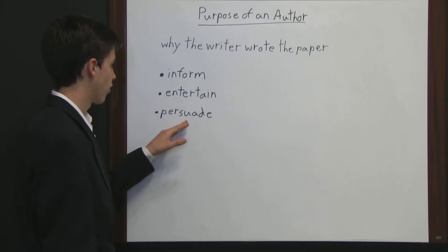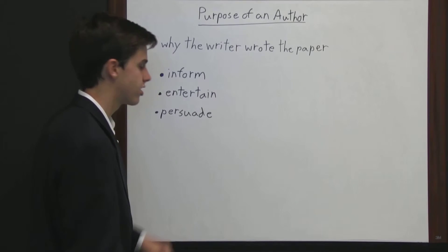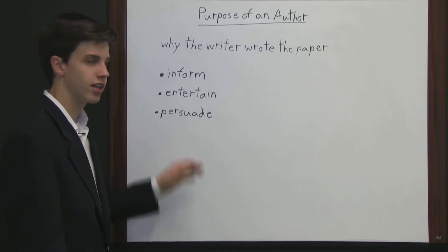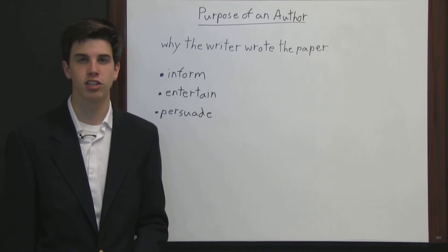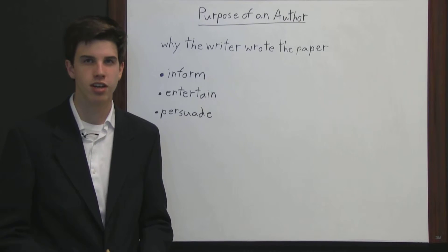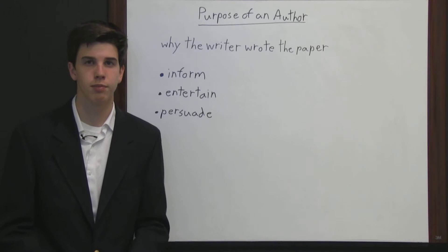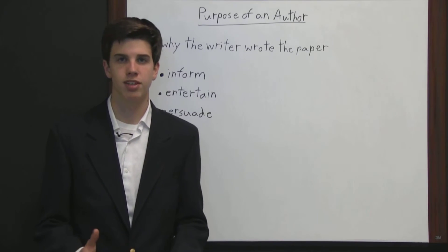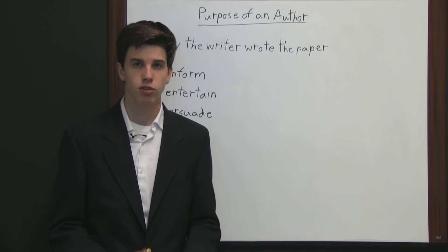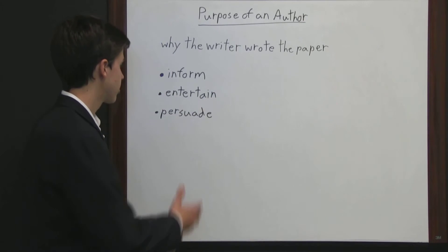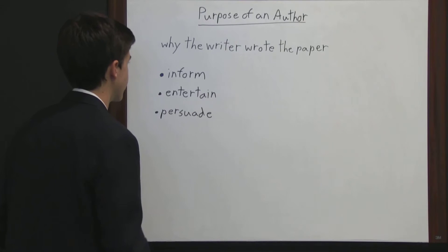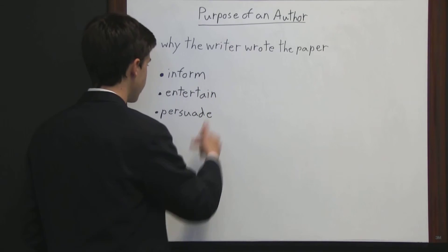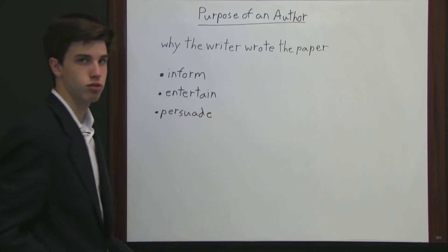The third purpose is to persuade, and this is actually the hardest type to determine because generally an author is going to try to hide that they're trying to persuade you. When someone knows they're being persuaded, they're going to be wary or skeptical of the arguments the writer is making. So a lot of times, a writer will try to disguise their persuasive paper as one that's meant to inform or entertain, when actually it's meant to persuade the reader.